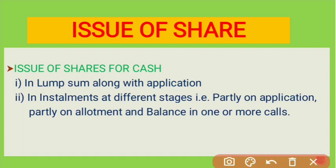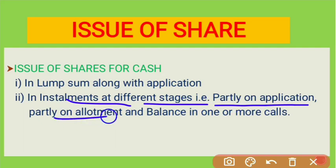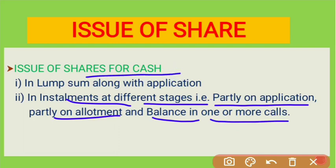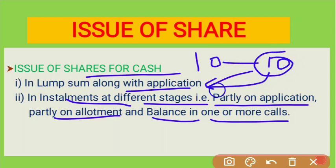This second method means the company demands share money in installments at different stages — some on application, some on allotment, and the balance in one or two calls. For example, suppose a share has a face value of ₹10, so the company may demand the full ₹10 at one time with the application, which is called lump sum along with application.